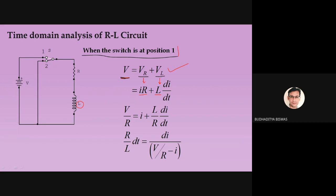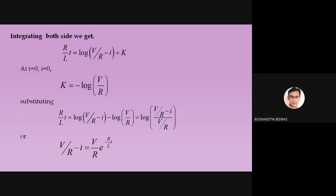Dividing both sides by R gives V/R = I + (L/R)·di/dt. Rearranging: (V/R)·dt = di/(V/R − I). Integrating both sides: (R/L)·t = −ln(V/R − I) + K, where K is the integration constant to be found from initial conditions.